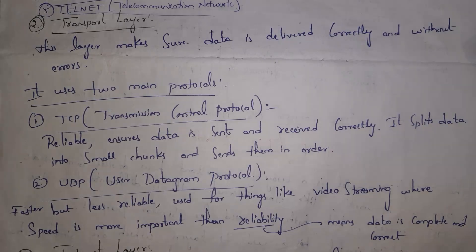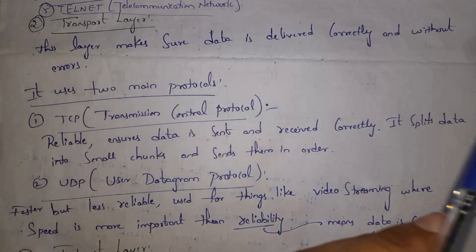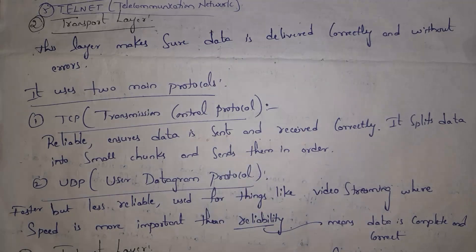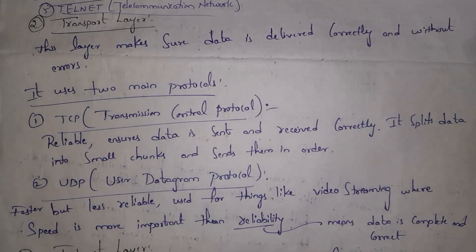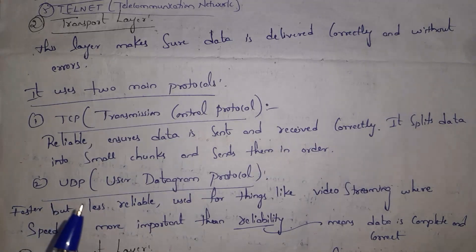Instead, TCP divides data into various pieces called packets and sends each piece in order. Whenever data is sent using TCP, the protocol checks for errors, which is why data is delivered to the receiver correctly. Because TCP checks errors while transferring data, it is very slow. UDP, on the other hand, sends data from one computer to another without checking for errors, which is why data transfer is very fast.